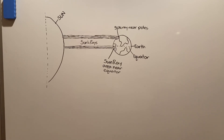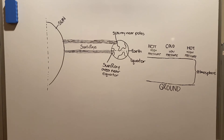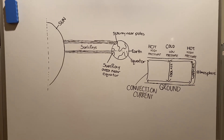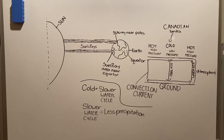Another reason is because of convection currents. Let's say that we have the atmosphere. Near the middle is a cold, low-pressure zone, while to the left and the right are high-pressure, hot areas. Because the cool air sinks, the warm air rises, and the air tends to move from areas with high pressure to low pressure, the atmosphere would have a convection current like this. The cold, low-pressure air is the Canadian Tundra. And since it's so cold, the water cycle is slower, mostly because there is less evaporation. As a result, there would be less precipitation.